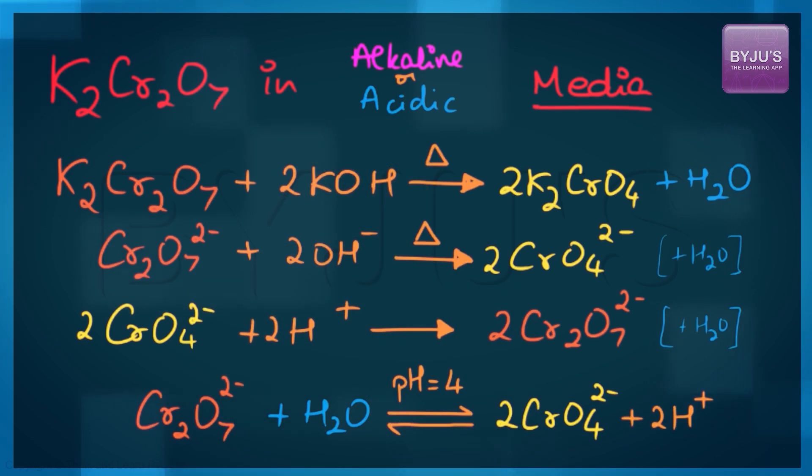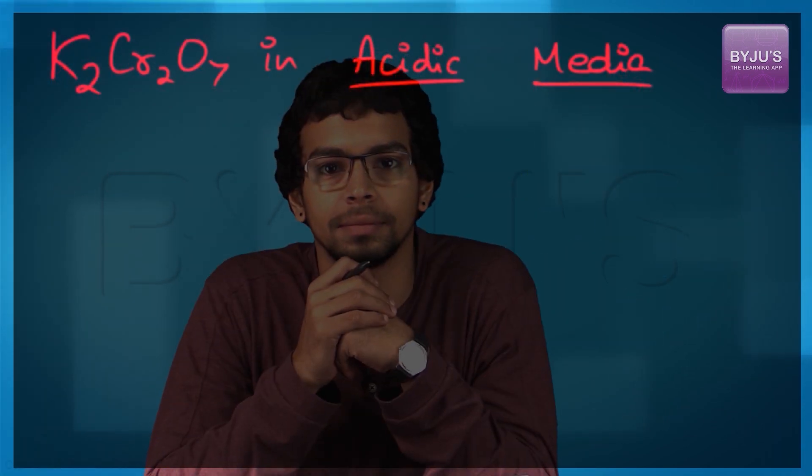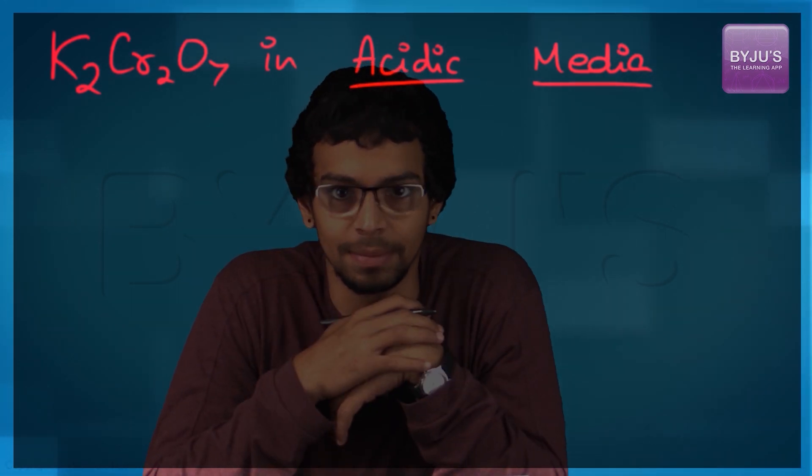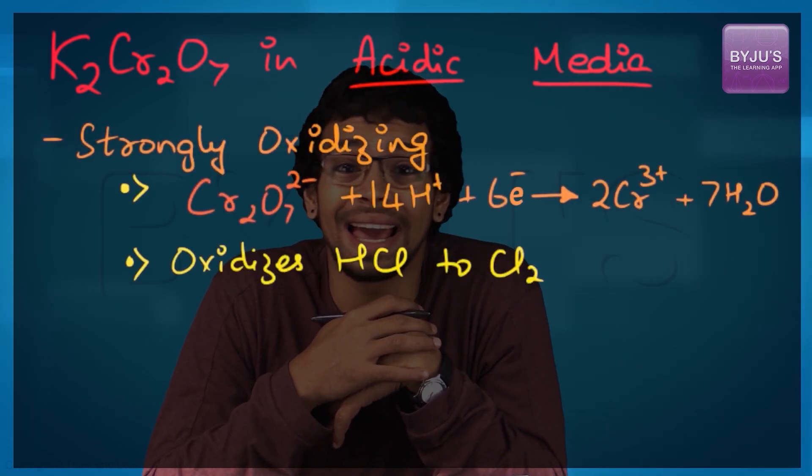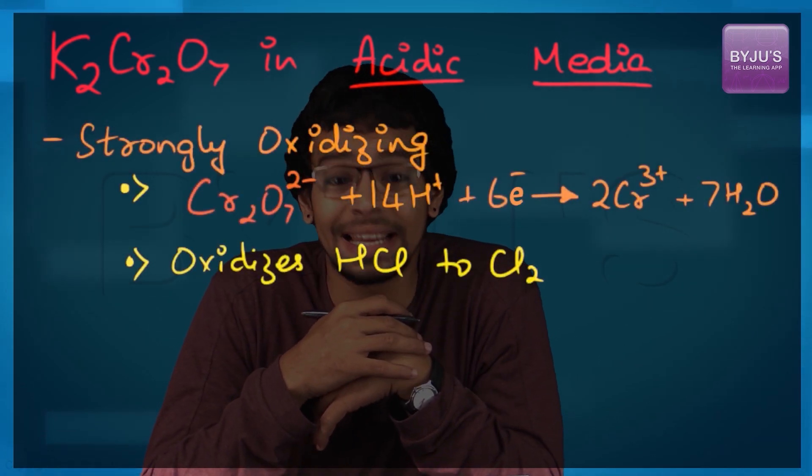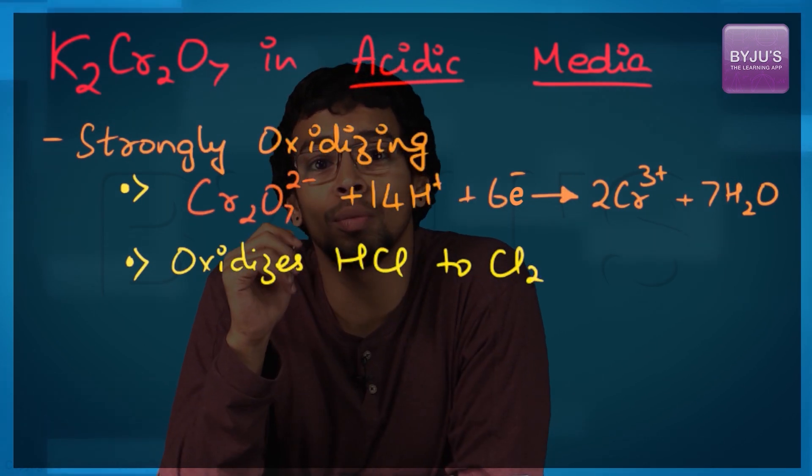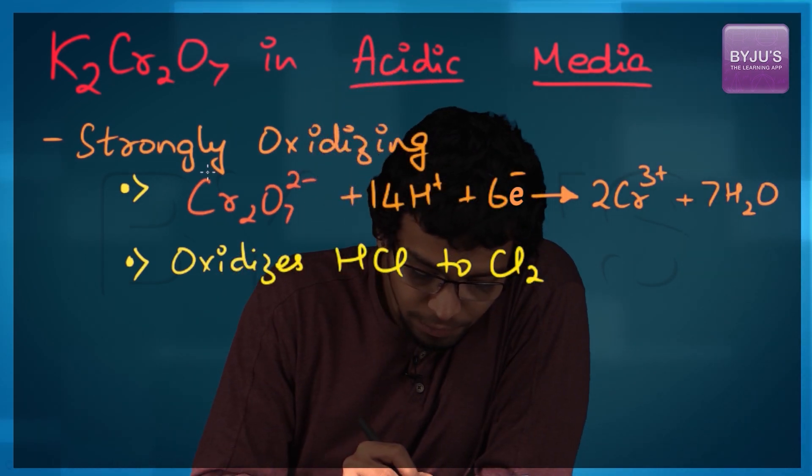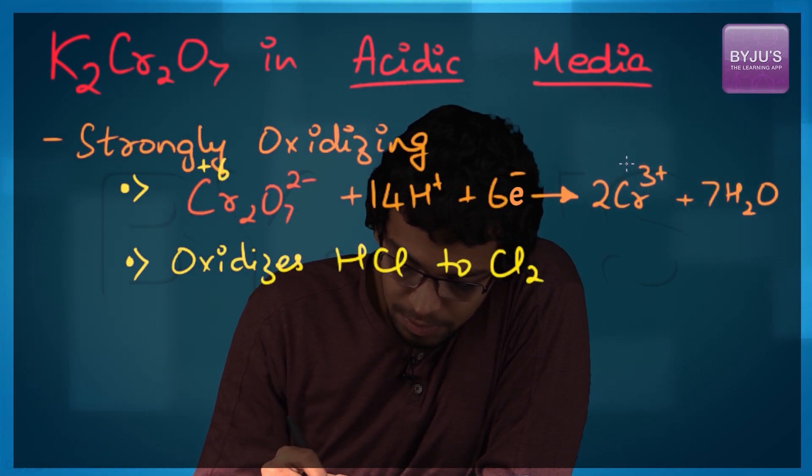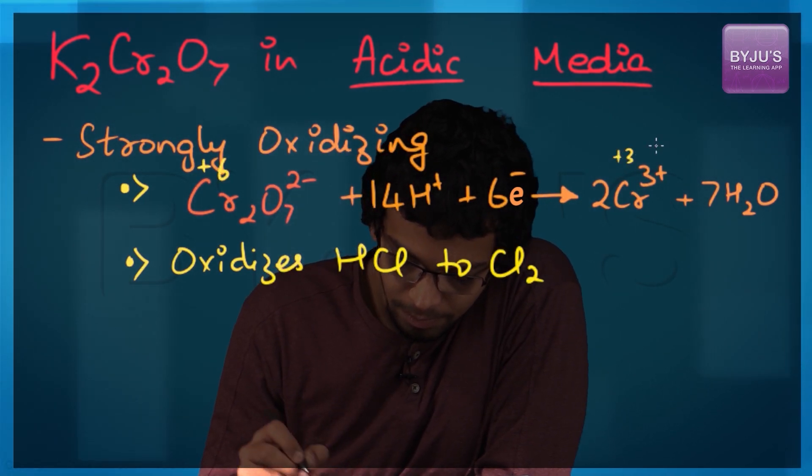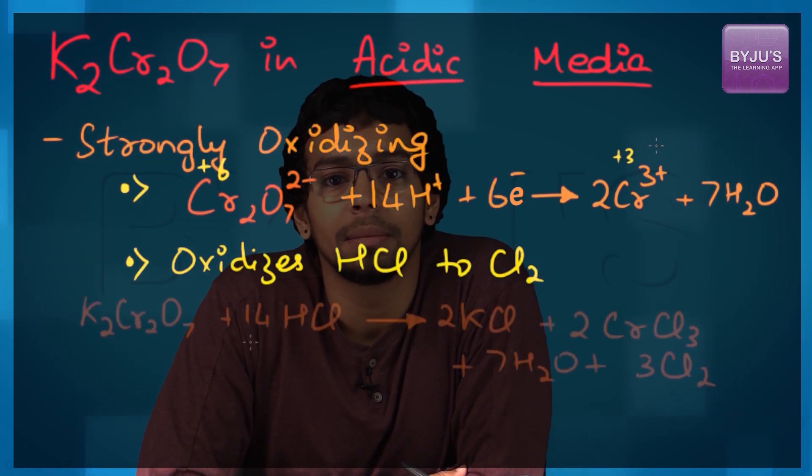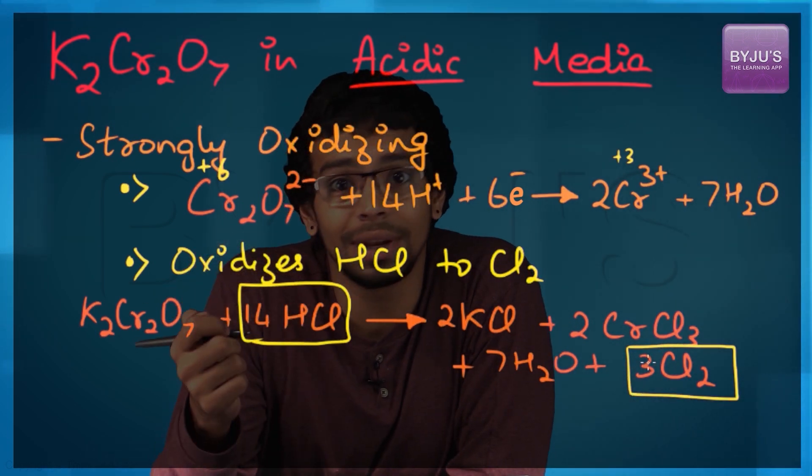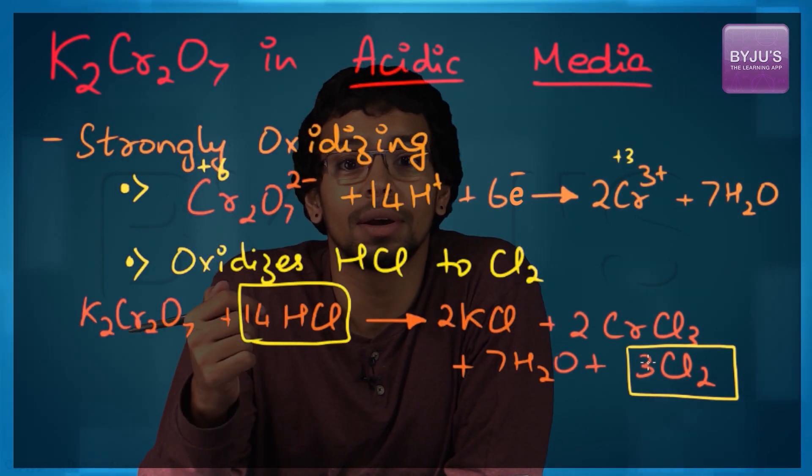In acidic media, the dichromate ion is strongly oxidizing. The dichromate ion readily converts to Cr3+ ion, where the oxidation state of chromium changes from +6 to +3. An easy example is when it oxidizes hydrochloric acid to chlorine gas. In this process it also makes chromium trichloride.